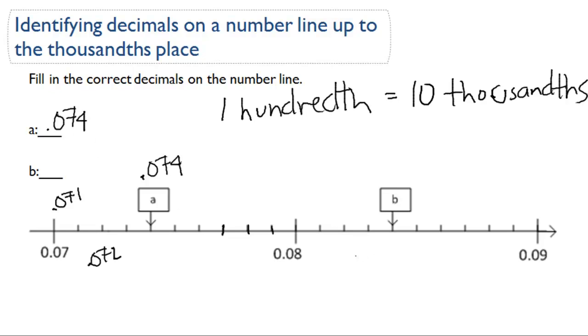Now, we do the same thing for point B. We start off at 0.08, so we have 0.081, 0.082, 0.083, and 0.084.